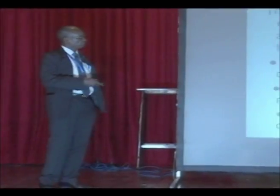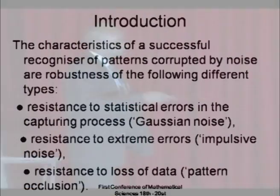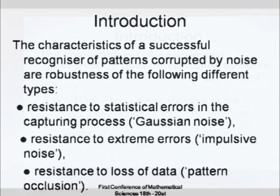The characteristics of pattern recognizers in our case are: they are robust — meaning they are resistant to classical errors and noise where data is corrupted. They are also persistent to extreme errors such as impulse noise — for example, if there is a blackout during market trading time, which is sometimes called impulse noise. They are also resistant to loss of data, what we call pattern occlusion — if we lose some part of collected data, what is the effect on overall performance? I've picked one pattern recognition or artificial intelligence method.